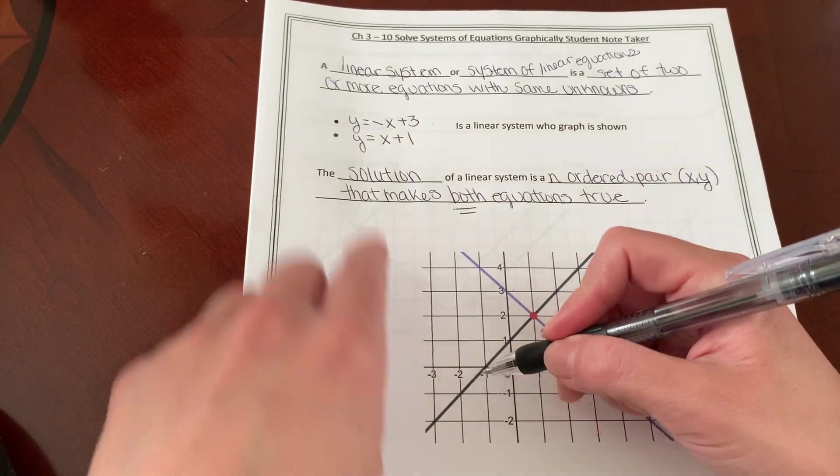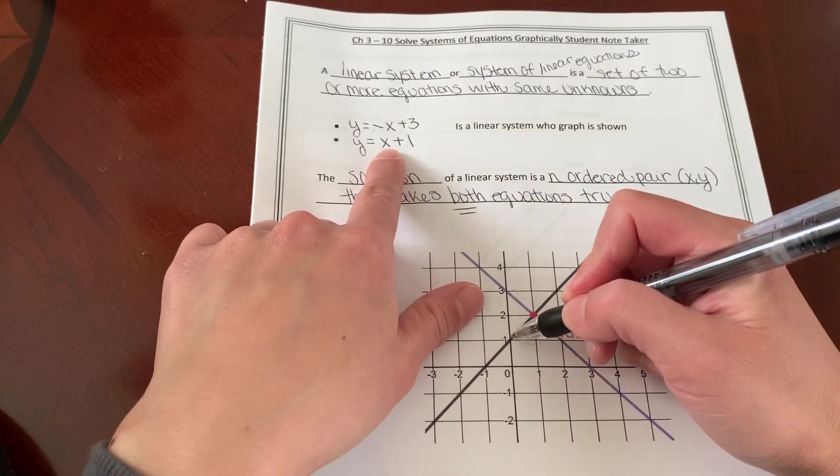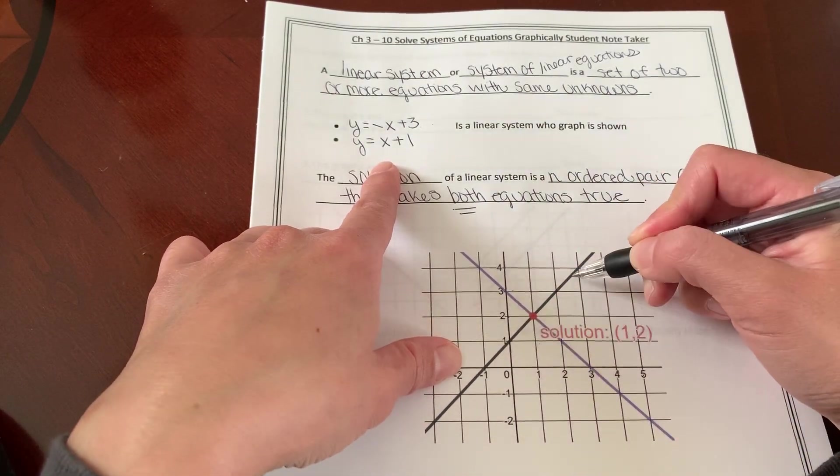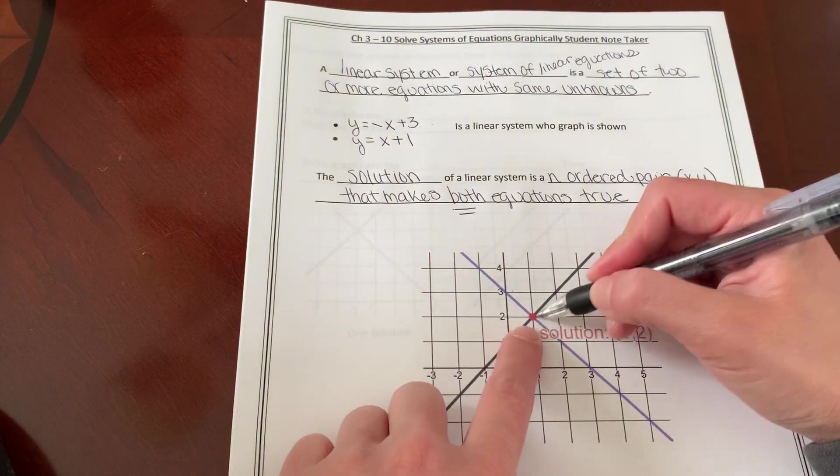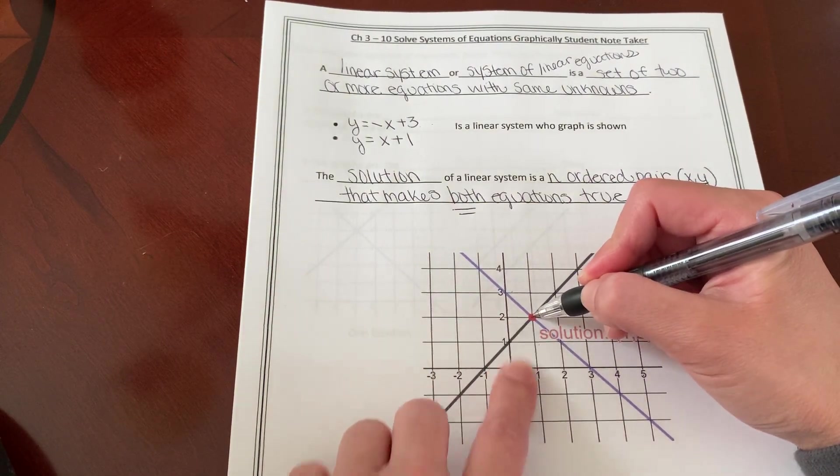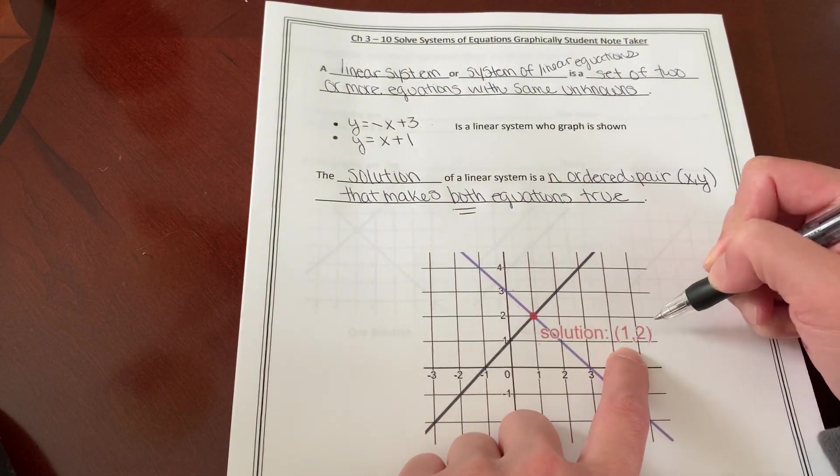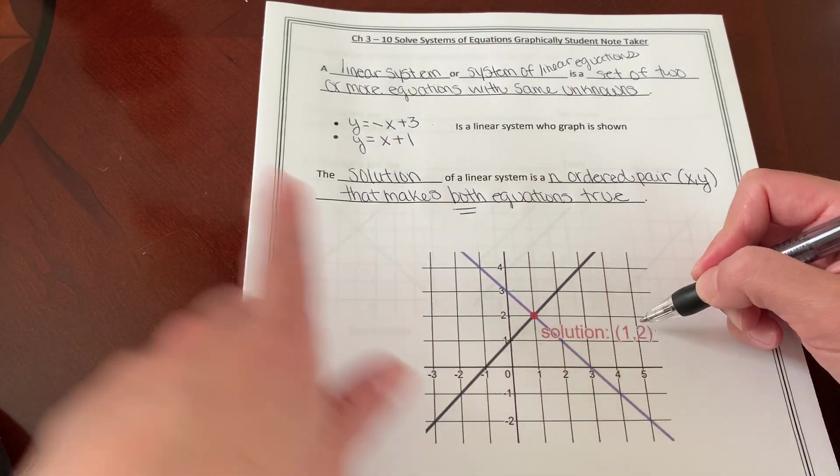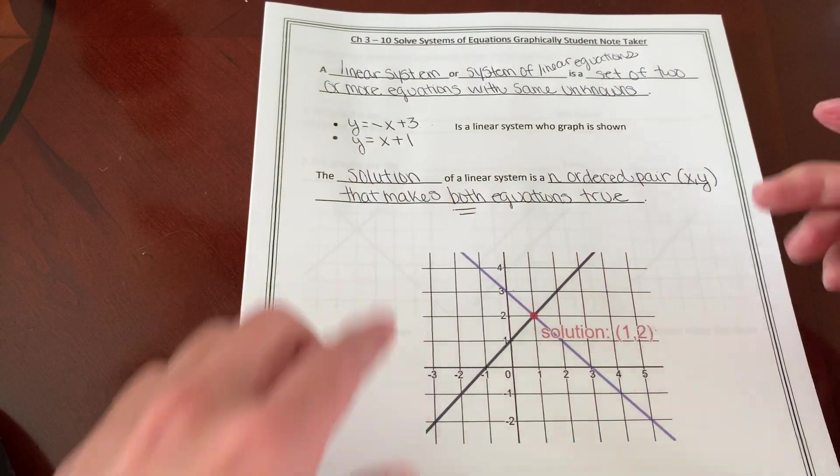And if I graph y equals x plus 1, I begin at x and I move up 1, right 1, up 1, right 1, which is my black line. So the purple and black line intersect right here, which is at 1, 2. So this ordered pair 1, 2 is the solution of this system.